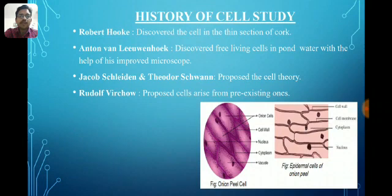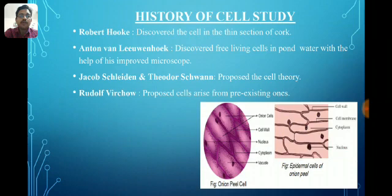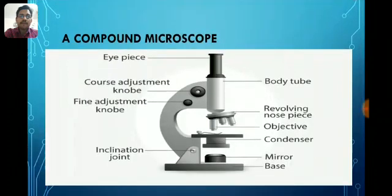Cell was discovered by Robert Hooke, who discovered cells from a thin slice of cork obtained from the bark of a tree. 'Cell' in Latin means a little room. Anthony van Leeuwenhoek discovered free-living cells in pond water using his improved microscope. Jacob Schleiden and Schwann proposed the cell theory, according to which all living structures are made up of cells. Rudolf Virchow added that new cells arise from pre-existing cells.